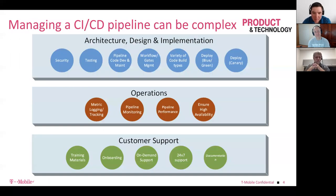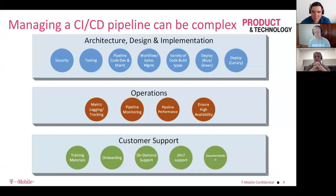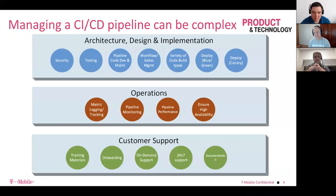Managing a CICD pipeline involves a lot of complexity — building and designing the thing, especially from a Jenkins perspective where you have all your plugins, you're keeping VMs updated, and there's a variety of deployment types people want, like blue-green and canary. As you take on more and more of this, your pipelines start becoming increasingly customized. Operationally, you face the question: should I run five Jenkins masters, or do I have one massive centralized one with fewer people to manage?